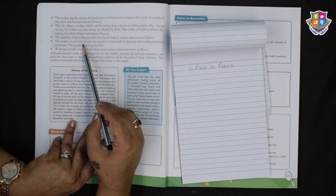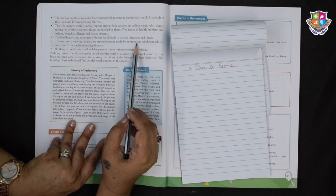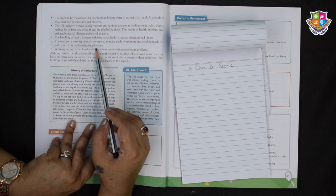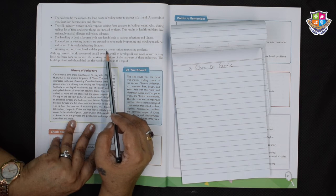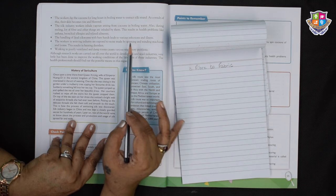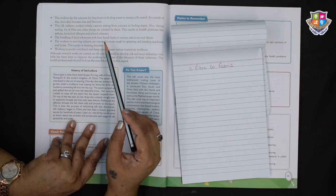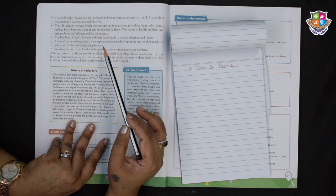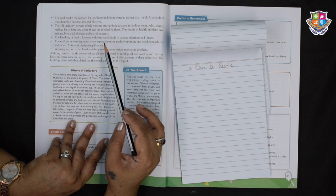The handling of dead silk worms with bare hands leads to various infections and illnesses. The workers in the weaving industry are exposed to noise made by spinning and winding machines and looms. This results in hearing disorders. Working in poorly ventilated and damp rooms causes various respiratory problems. Children, as I am reading these health hazards, if you see their condition is really pathetic. I mean just to give us the best, they are toiling so much and their health is at a risk.